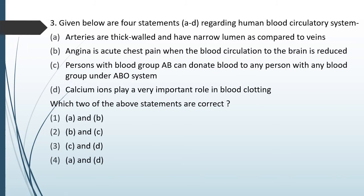Question No. 54: Given below are 4 statements A to D regarding the human blood circulatory system. A — Arteries are thick-walled and have narrow lumen as compared to veins. B — Angina is acute chest pain when blood circulation to the brain is reduced. C — A person with blood group AB can donate blood to any person under the ABO system. D — Calcium ions play a very important role in blood clotting. Which two statements are correct? The correct answer is Option 4: Statements A and D are correct.